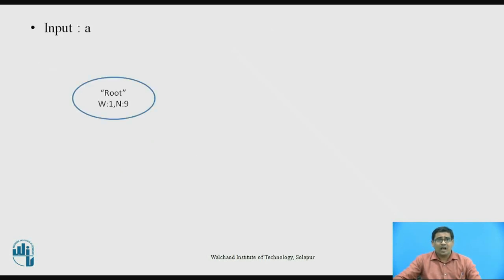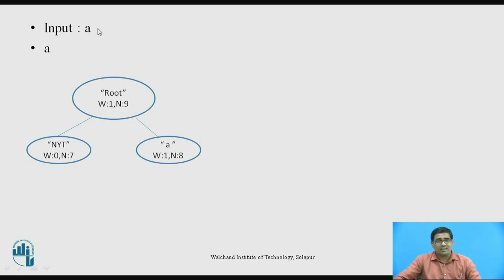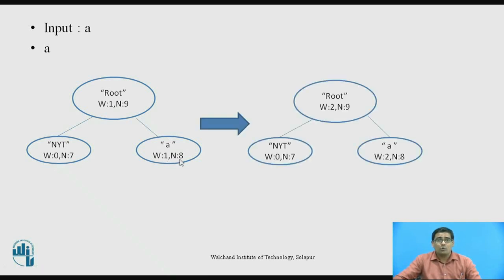When transmitting the second A, check whether A has been transmitted already — yes, A was already transmitted. So simply update A: weight becomes 2, N remains 8. The parent node also updates: 0 plus 2 equals 2.